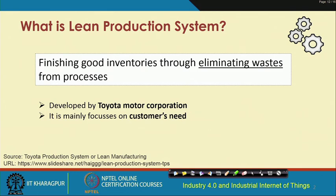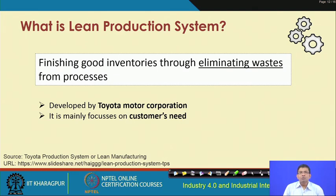The lean production system is all about eliminating wastes from manufacturing processes to achieve higher quality products. It has its origin in Toyota Motor Corporation. The lean system focuses on addressing the customer's needs directly — the customer is central. It targets eliminating over-usage of resources, using only what is precisely required, eliminating waste, and producing goods the customer is satisfied with in reduced time and higher quality.